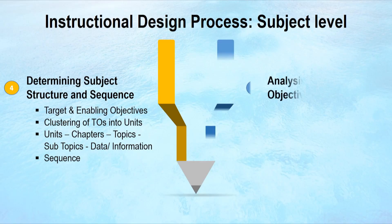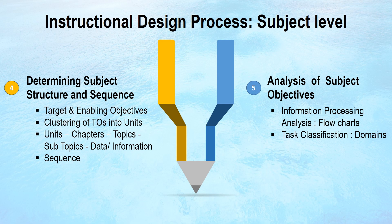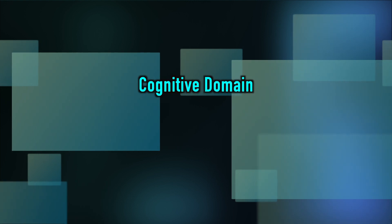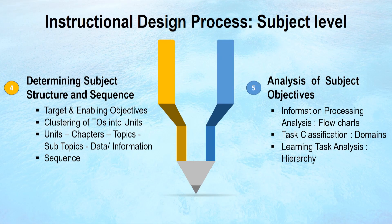The next activity at the subject level is the analysis of subject objectives. This involves information processing analysis, and task classification — that is, stating learning outcomes in the cognitive, psychomotor, and affective domains. Learning task analysis is also conducted to examine hierarchy, analysis, and synthesis. Separate videos are available on task analysis for further study.